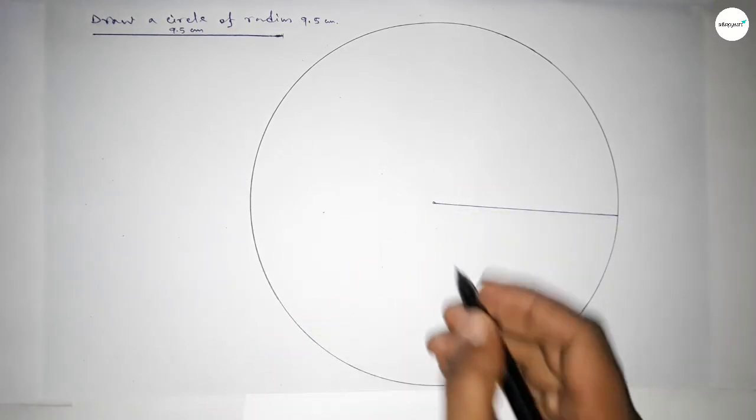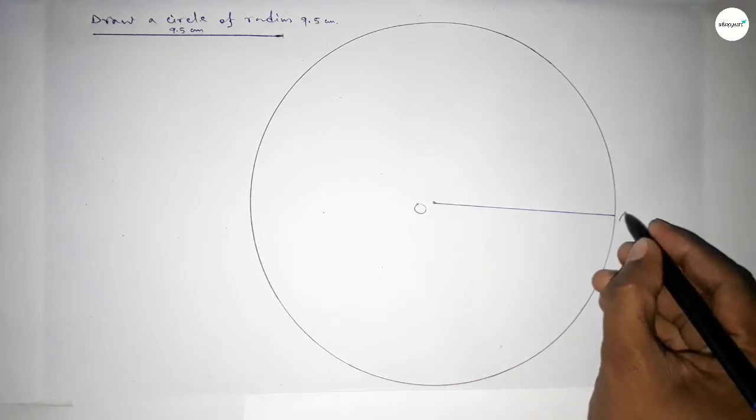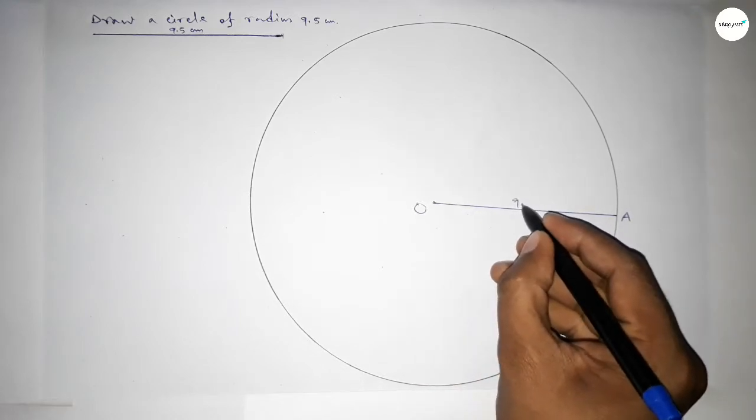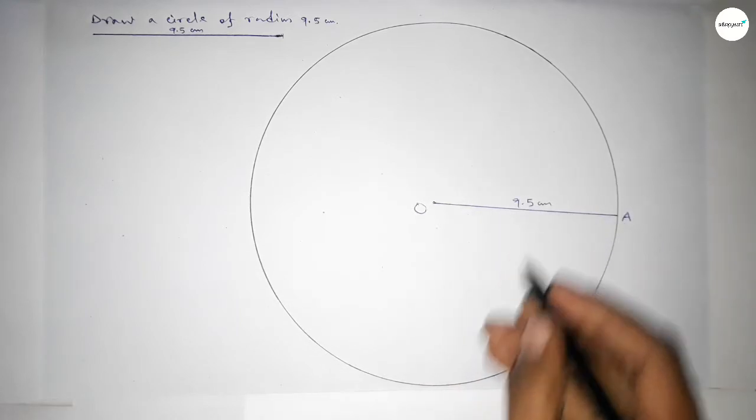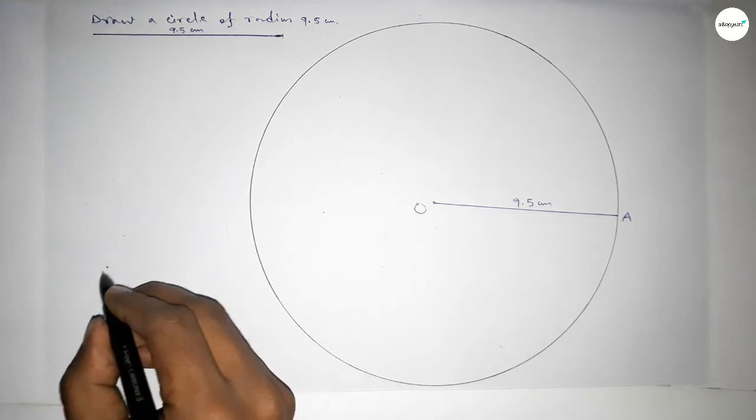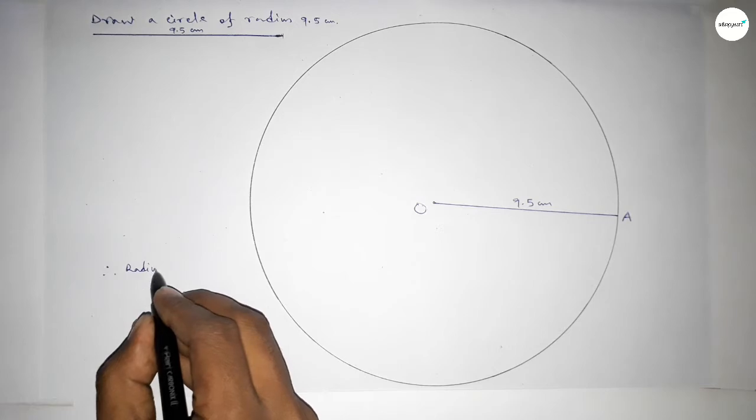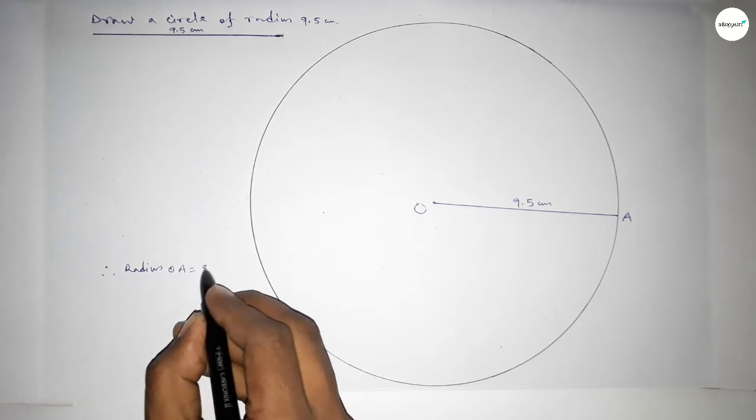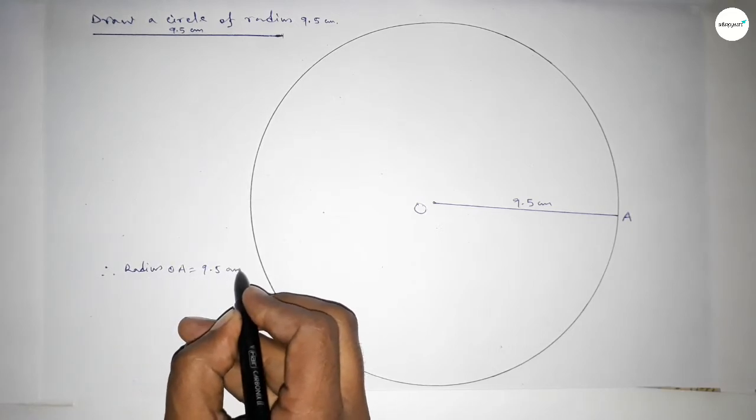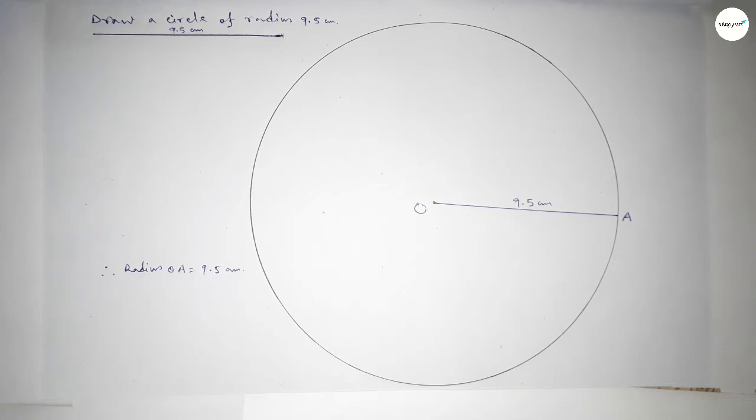So now taking the center of the circle here O and here A. So OA is 9.5 centimeters. Therefore, radius OA equals 9.5 centimeters.